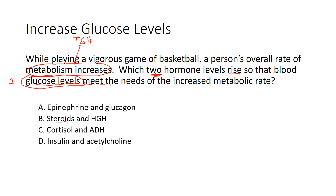Option B talks about steroids and HGH, human growth hormone. If you've worked on your flowchart, you can see that human growth hormone really has nothing to do with glucose levels — it's about increasing cell division, muscle, and bone growth. We never talked about steroids in relation to glucose levels either. So we can eliminate B and cross it right out on your exam.